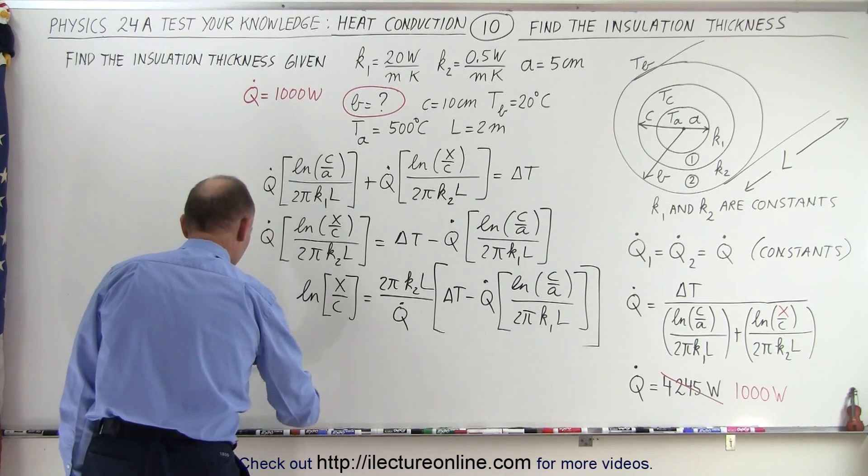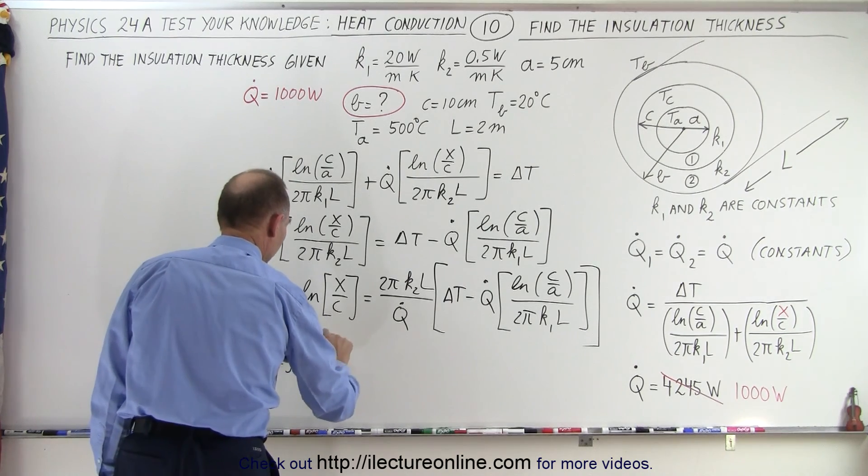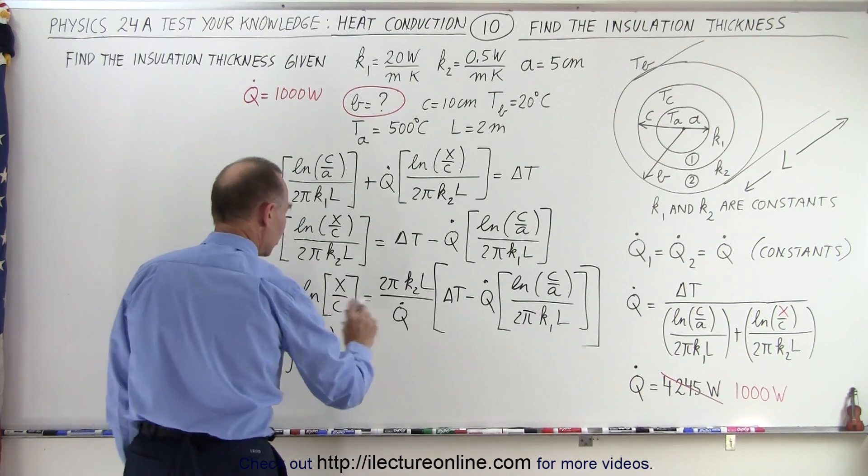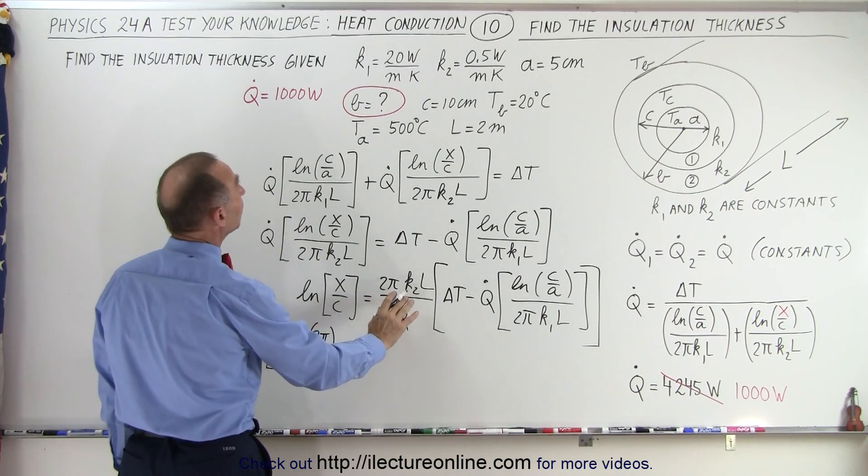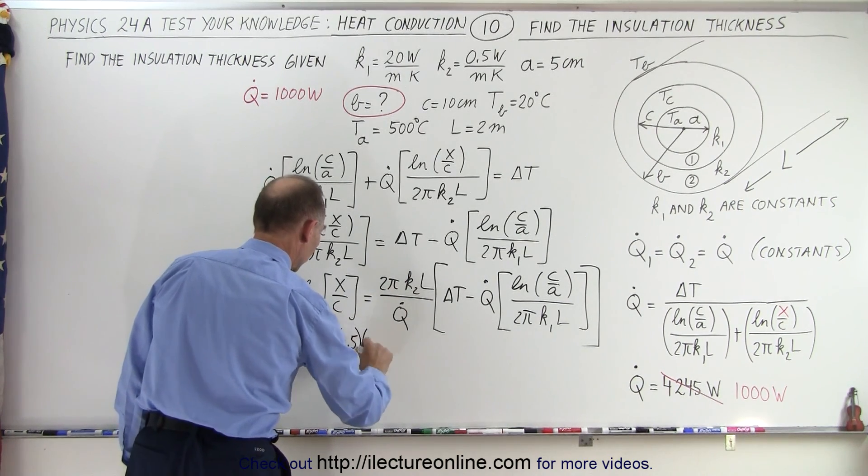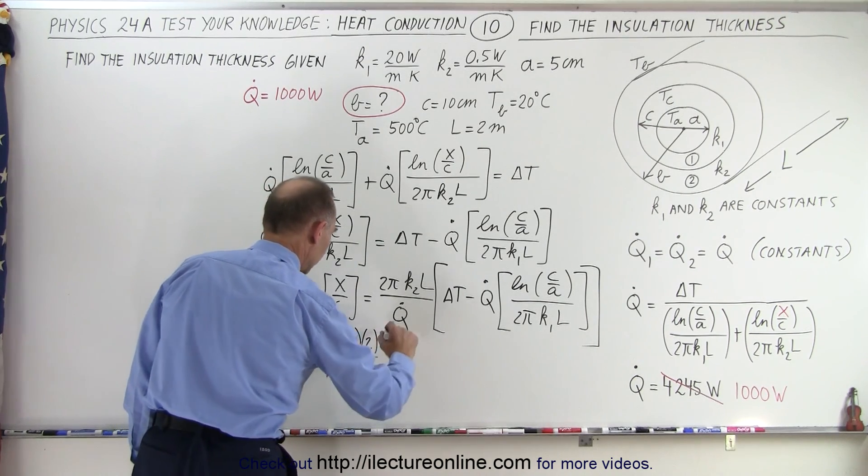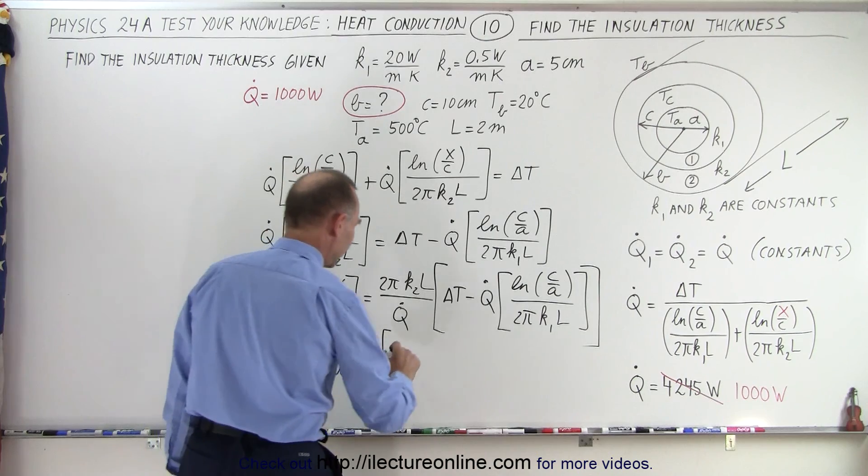The natural log of x over c is equal to 2 pi, and I'm going to leave the units off because this is a messy equation, k2 is 0.5, l is 2, q dot is a thousand.